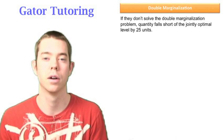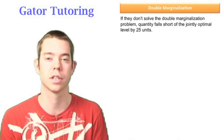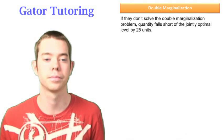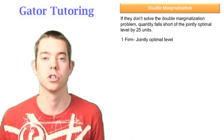So we're going to take a look at the one-firm scenario where we have solved the double marginalization problem, and we're going to compare that quantity to the two-firm scenario.